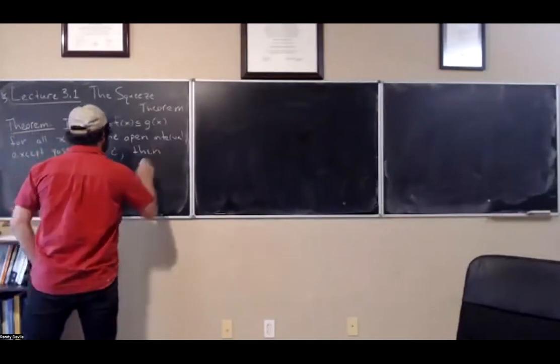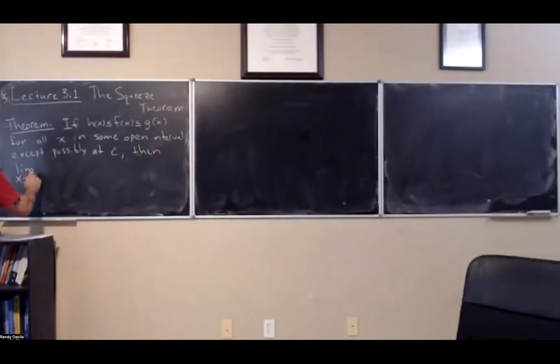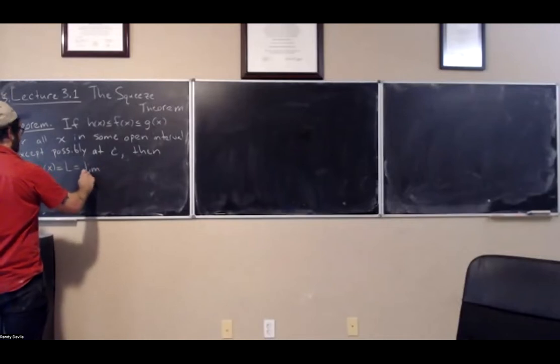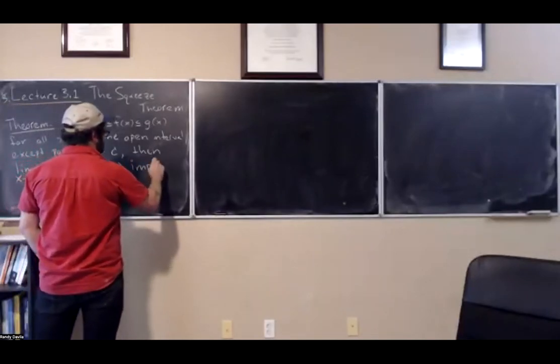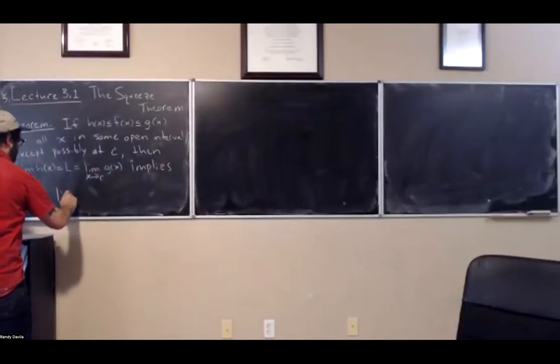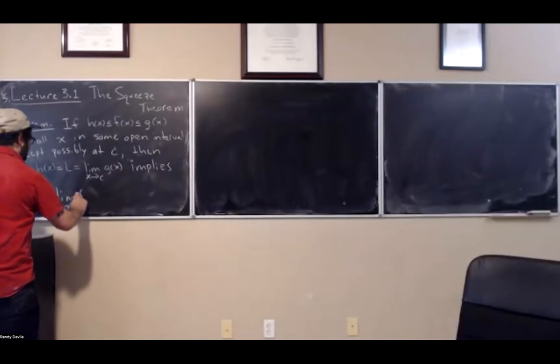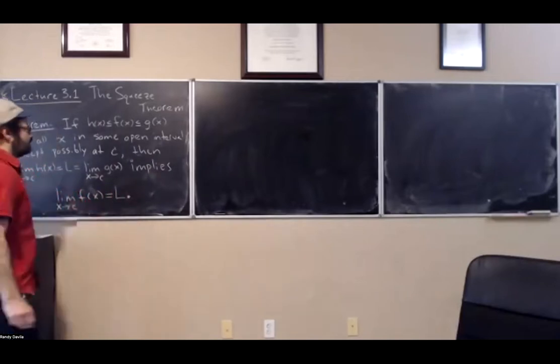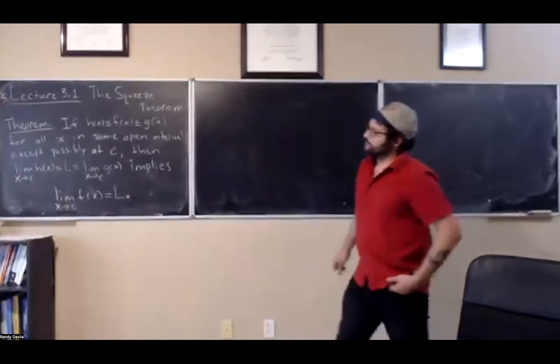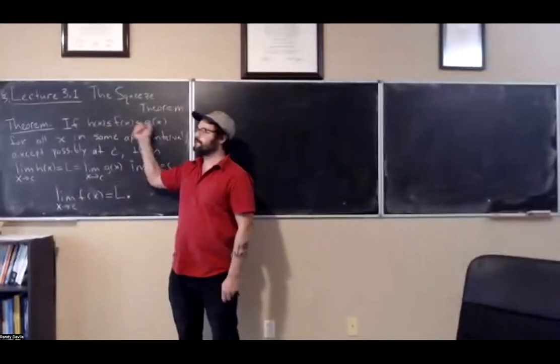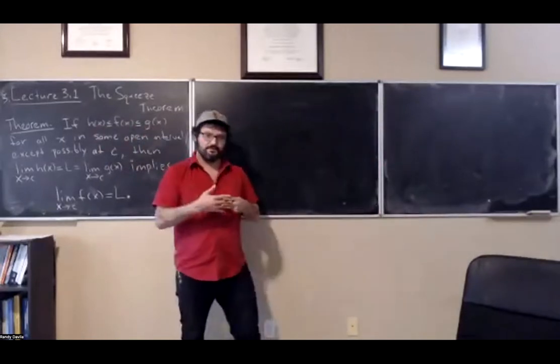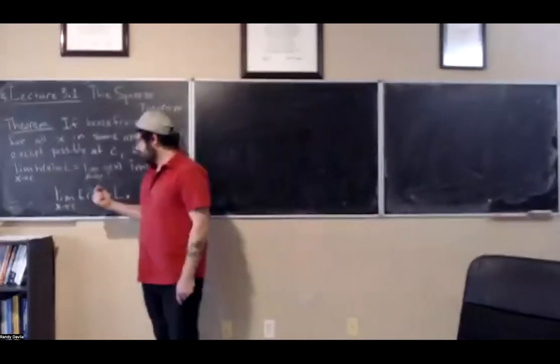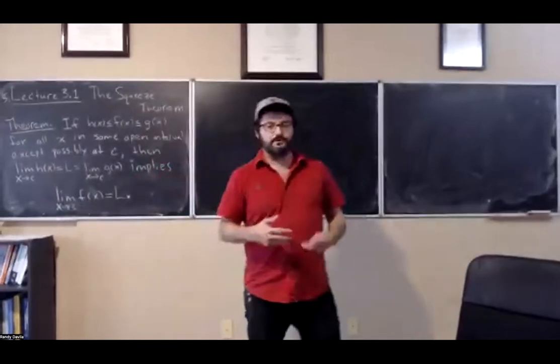Then the limit as x approaches c of h of x equals L equals the limit as x approaches c of g of x. This implies that the limit as x approaches c of f of x exists and also equals L. So what this is saying is that if we can bound a function from below and above by two functions that we know, on some interval, and we know that these two functions converge to the same limit as x approaches c, then we immediately know the value of the limit as x approaches c for the middle function f.